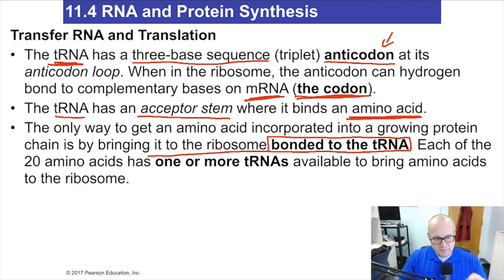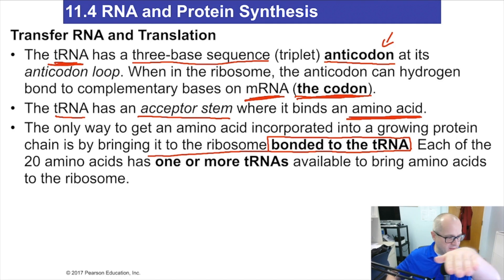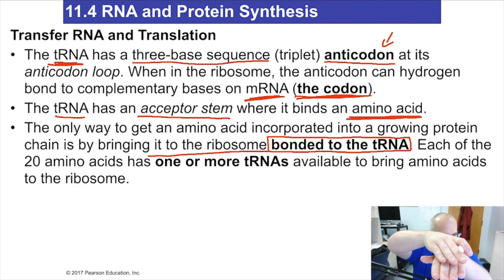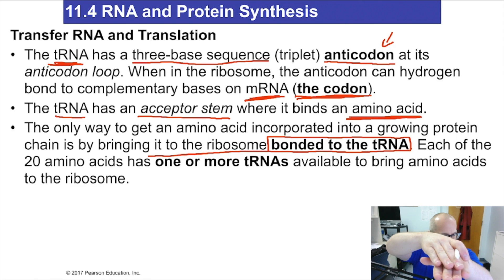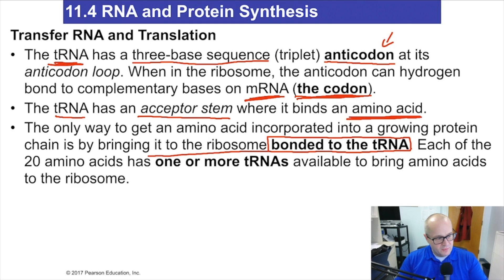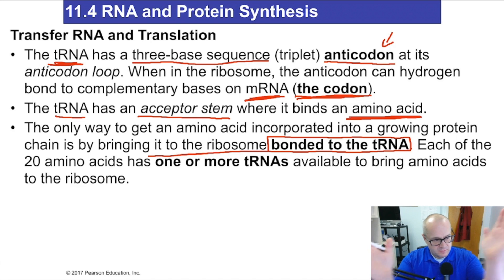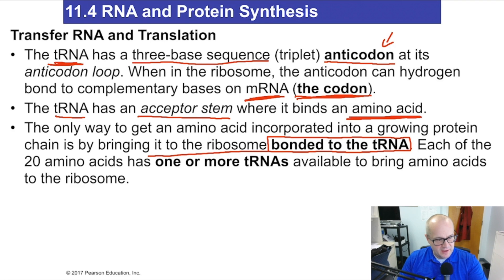The only way to grow the amino acid chain is to bring it to the ribosome bonded to the tRNA. The amino acids are bonded to the tRNA as they come in. The mRNA is in the ribosome and the tRNA comes on top — the codon on the mRNA, the anticodon on the tRNA, with an amino acid attached. This brings amino acids into close proximity so an enzyme can slam them together and make the peptide bond — building the right primary structure of the protein.